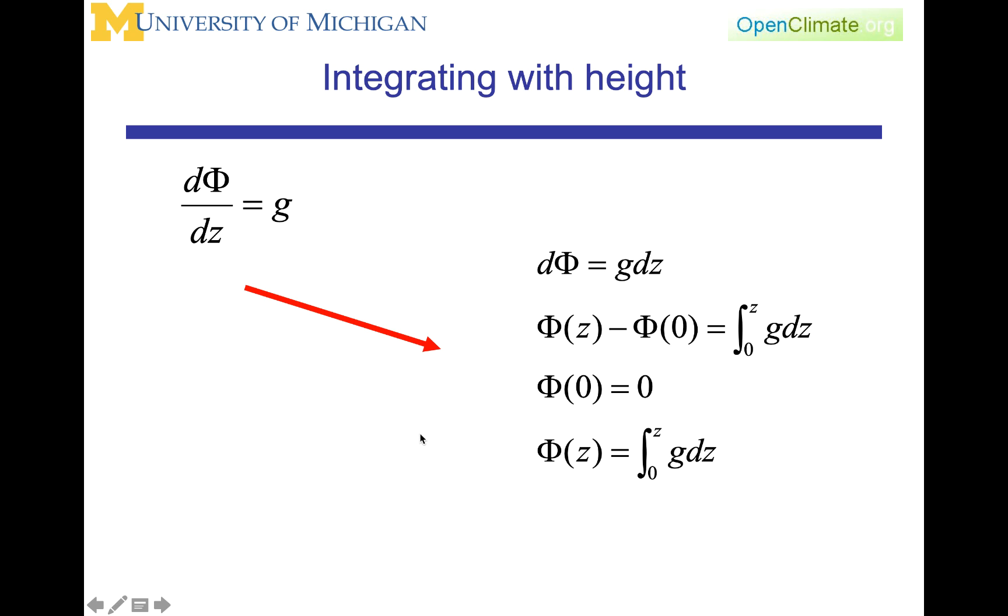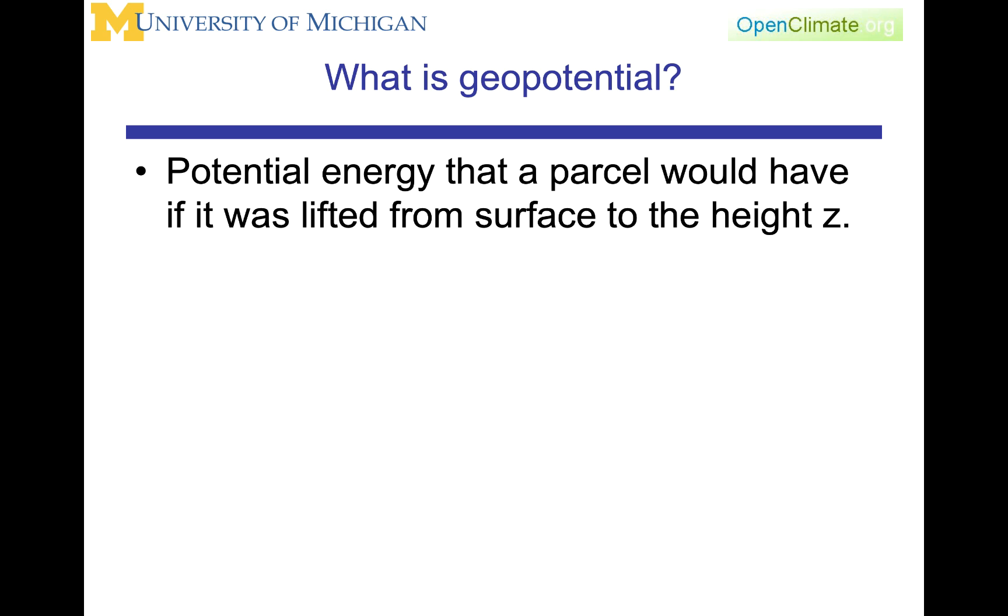If you think about this for a second, when we integrated with the pressure, we looked at an integral from a height above, so from a certain height to the top of the atmosphere, because we were trying to get the weight, we're trying to get the pressure at a certain altitude. And here with geopotential, we're integrating from the ground up. What is geopotential? Geopotential is the potential energy that a parcel would have if it was lifted from the surface to the height z.